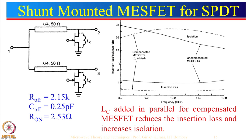Looking at the results: insertion loss without compensation is higher, but it is reduced with the compensated LC circuit. For isolation, the compensated MOSFET achieves better than 25 dB isolation over the entire frequency range of 8 to 12 GHz.